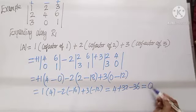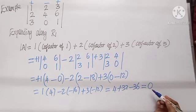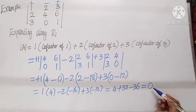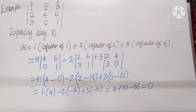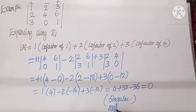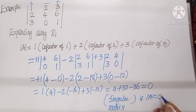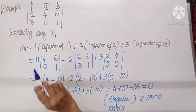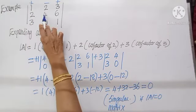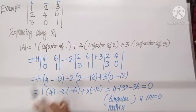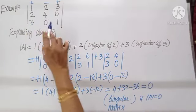The determinant value can be any number — a fraction, positive, or negative. When the determinant vanishes, that is when determinant A equals 0, the matrix is called singular. So the matrix A is singular if determinant A equals 0. Note that you can also expand using the second row: 2 times cofactor of 2, plus 4 times cofactor of 4, plus 6 times cofactor of 6 — for any row or column.